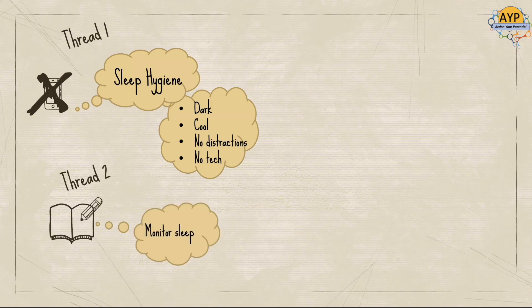Thread one is making sure we've got a nice dark, cool bedroom with no distractions or tech in. Sleep hygiene. Monitor your sleep - just rate the quality. Three stars: a really good night's sleep. One star: a rubbish night's sleep. You don't need an app for this. Perhaps make a rough note of how many hours sleep, but it doesn't have to be perfect - just a rough idea so you can see the current situation of your sleep, good and bad.